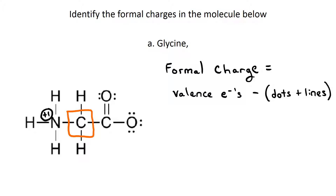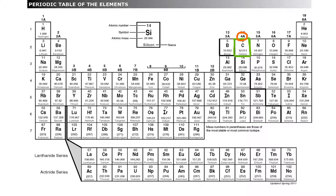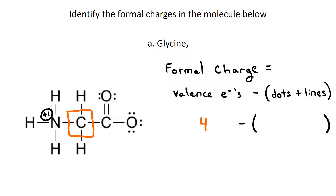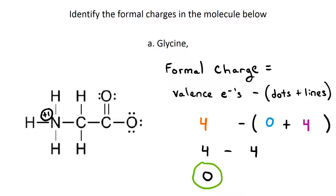Moving over to the carbon next to it. Carbon is in group 4A, so it has four valence electrons. There are zero dots around that carbon and four lines. So the formula for formal charge gives us four minus four, or zero charge on that carbon.